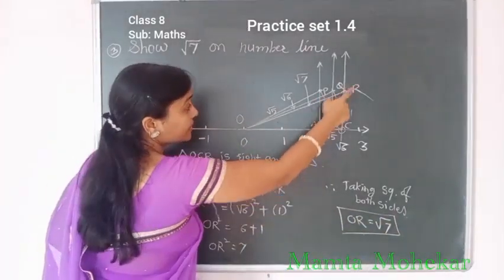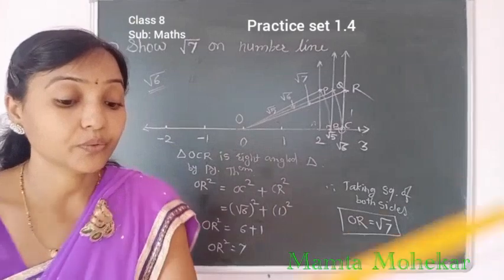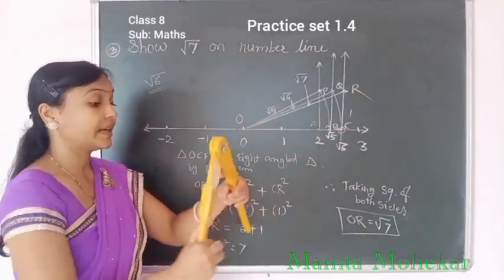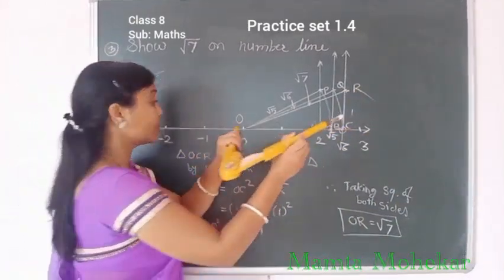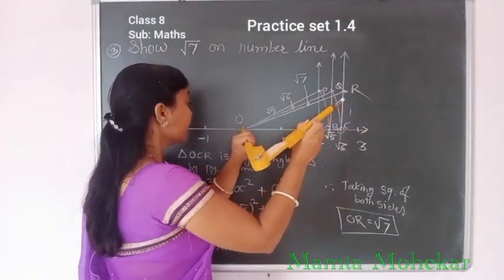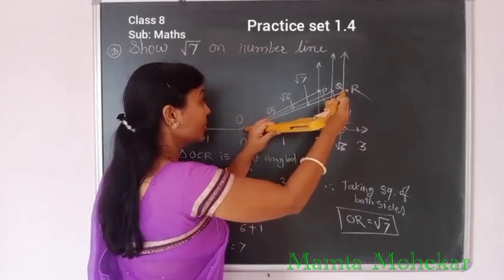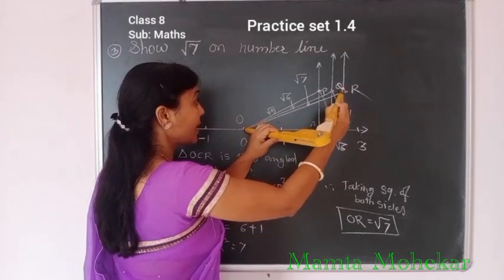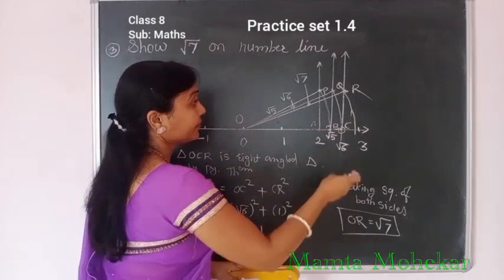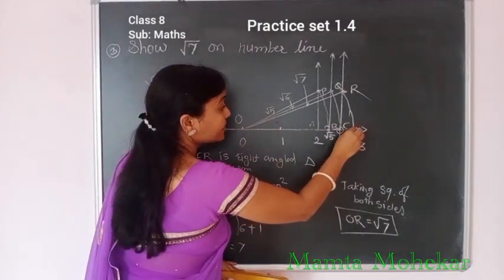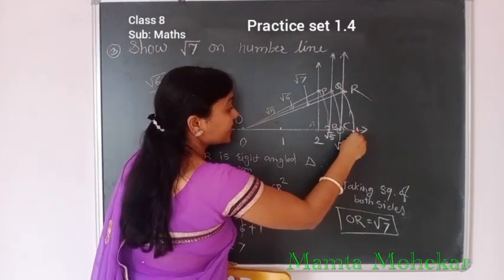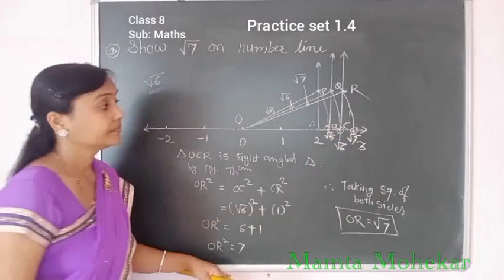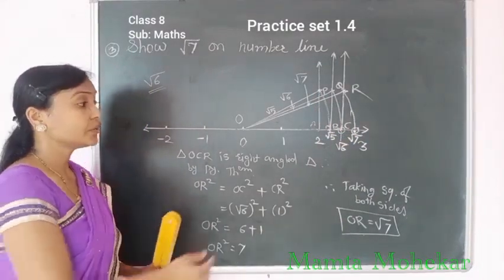This is root 7. So take point R on the number line: use a compass, take distance OR as radius, and make one arc on the number line. This point is root 7. In this way, we show root 7 on the number line.